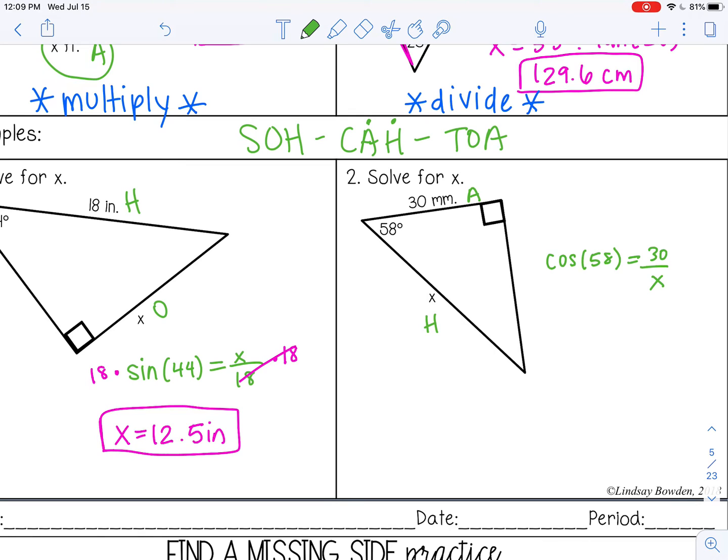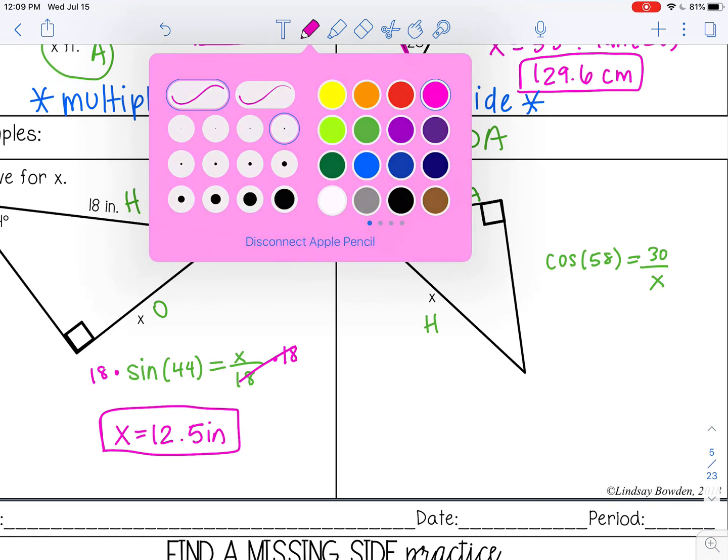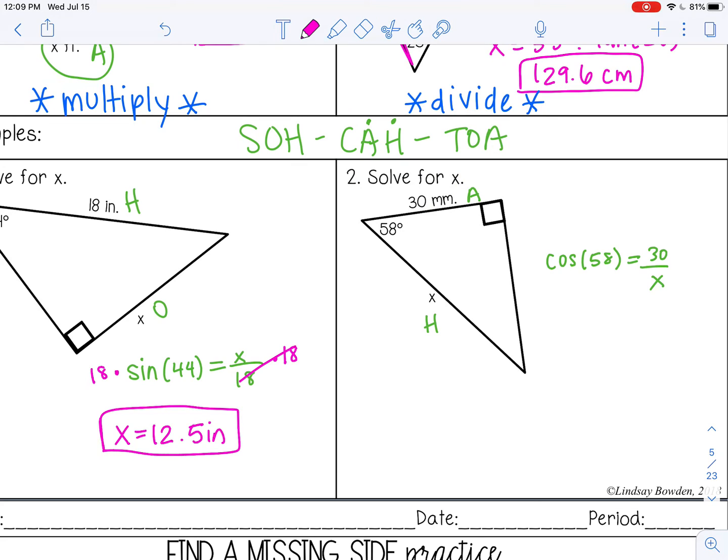So we can multiply by x on both sides, and then divide by cosine of 58 on both sides. You may start to figure out that there's really a shortcut - you can just take 30 divided by cosine of 58.